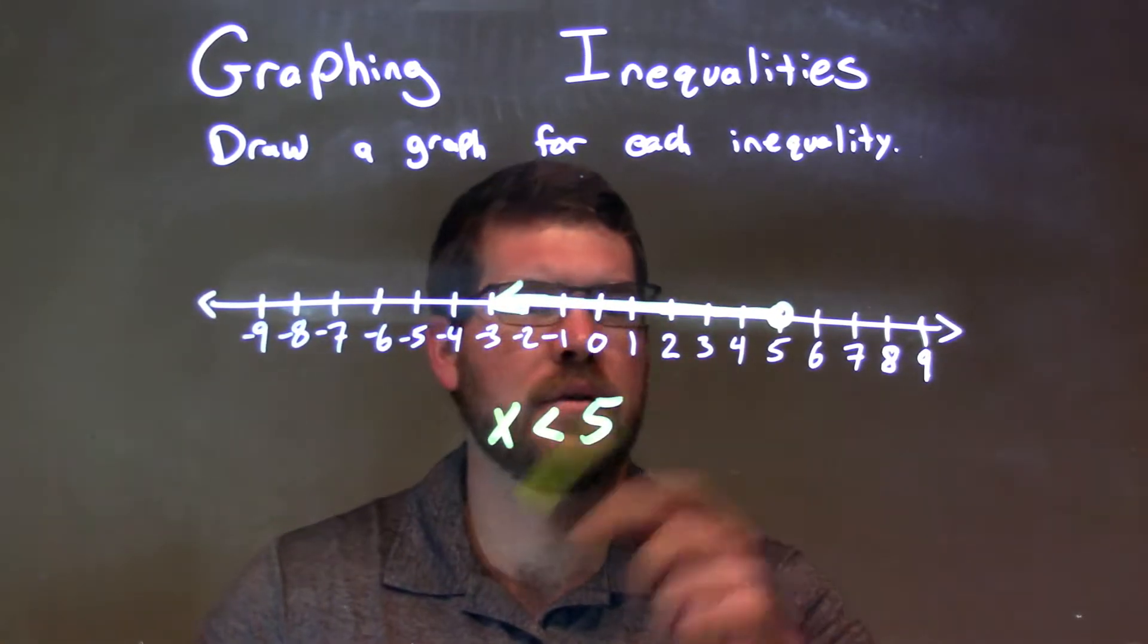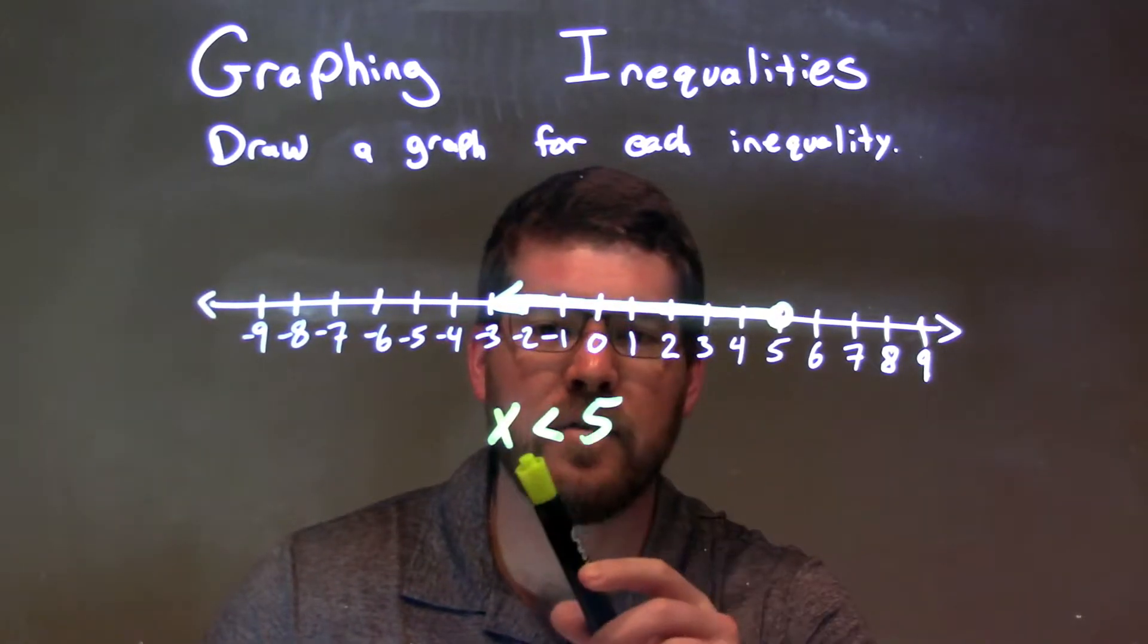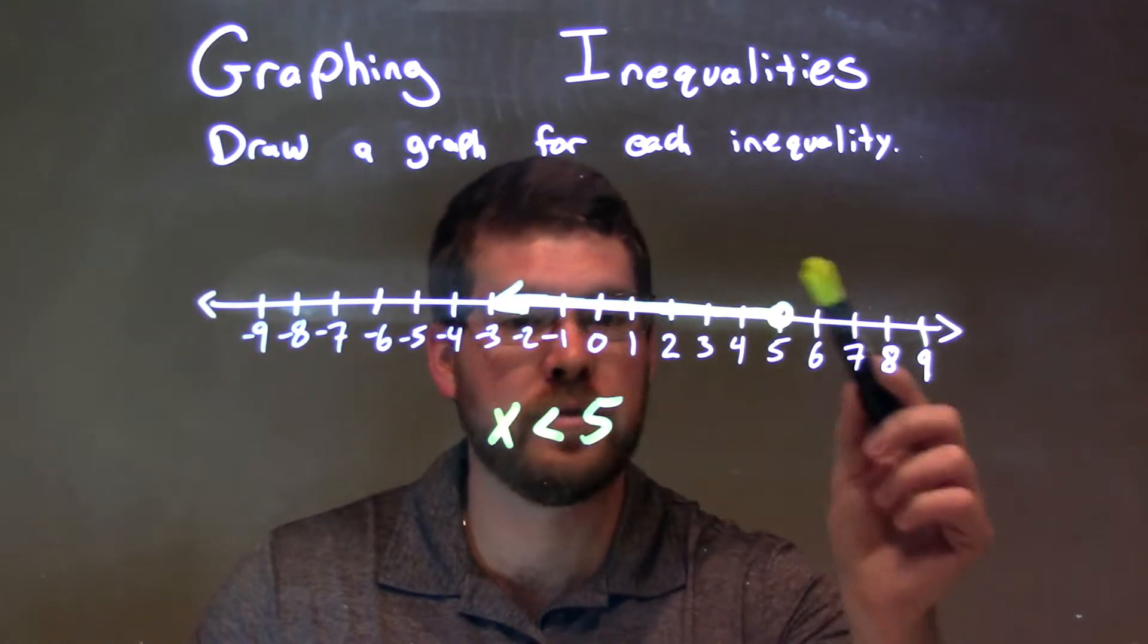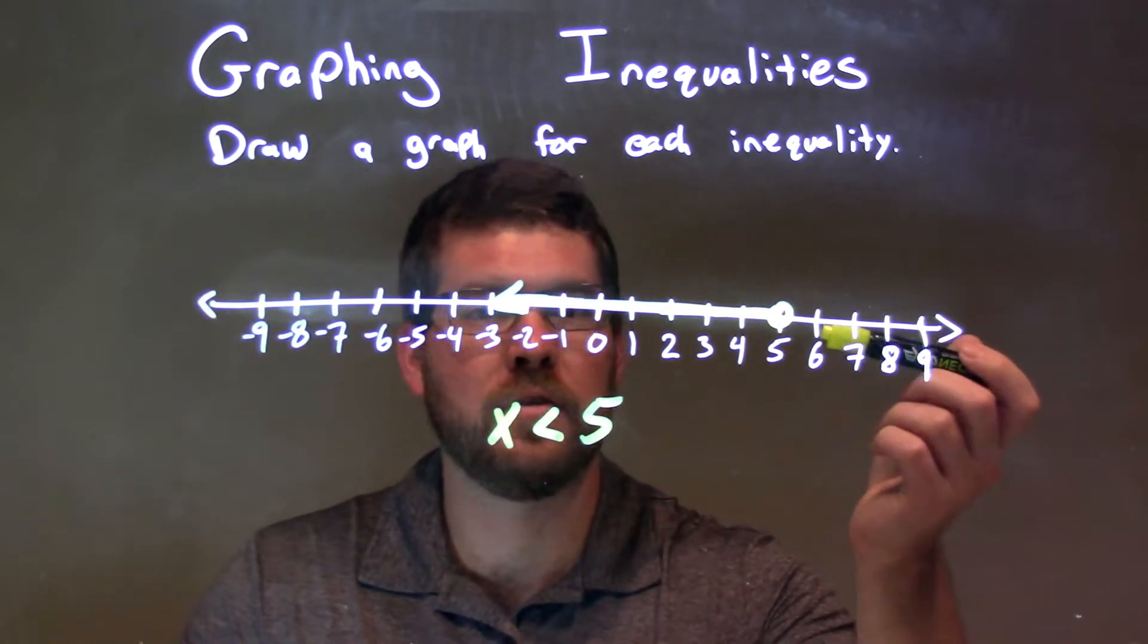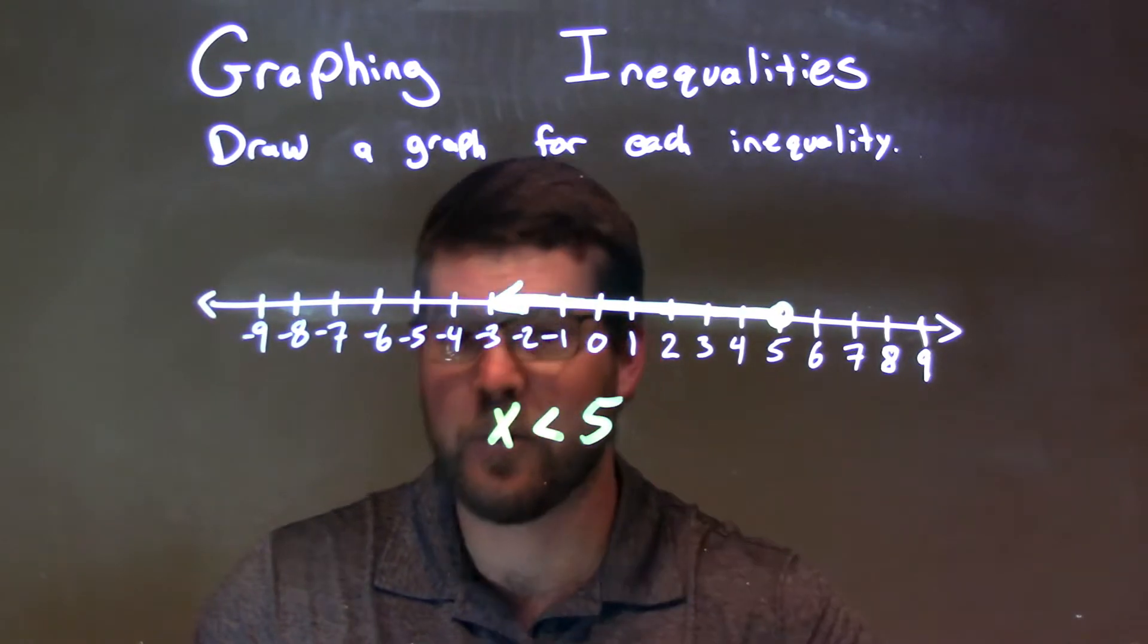So the main thing is to point out: we start at 5, that's the main thing. Then since x is not equal to 5, we have an open circle. Then from there we shade to the left because x is less than 5, and now our graph is our final answer.